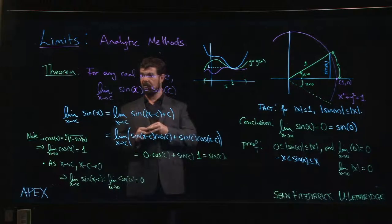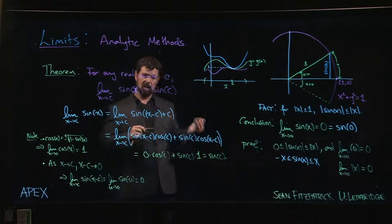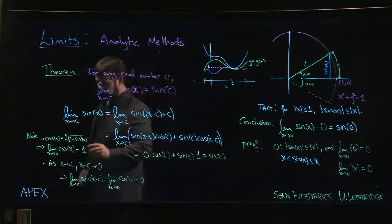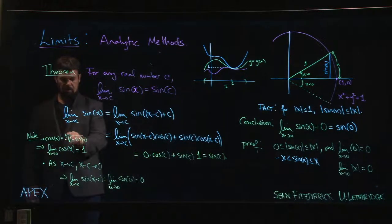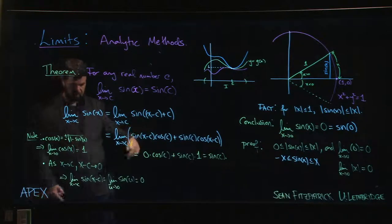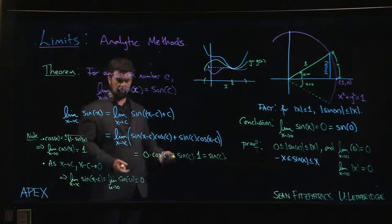So that takes care of this limit. So the limits for sine can be done by direct substitution. By playing around with this relationship between sine and cosine, we can make the same case for cos. Or we could do this angle addition kind of game as well, using the fact that the limit of cos is 1.